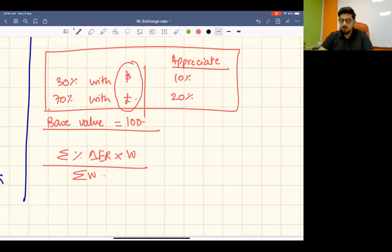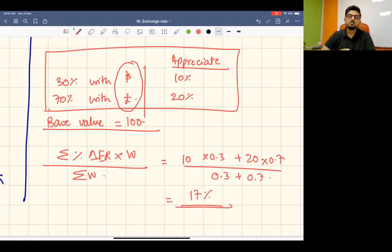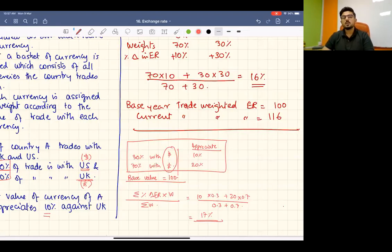So against the US, the exchange rate changed by 10% and its weight is 0.3, plus 20% times 0.7, divided by 0.3 plus 0.7. So the calculation is 3 plus 14 equals 17. So 17% is the value. The currency basically appreciated 17%.